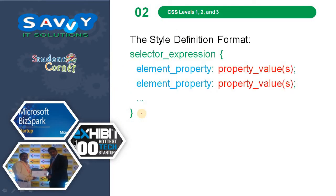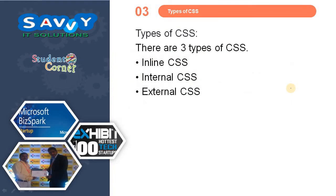Now, how we define styles: the syntax is a selector expression followed by element property, colon, and property values — and so on for as many properties as needed. Now, types of CSS — there are three types: one is inline CSS, the second is internal CSS, and the third is external CSS.